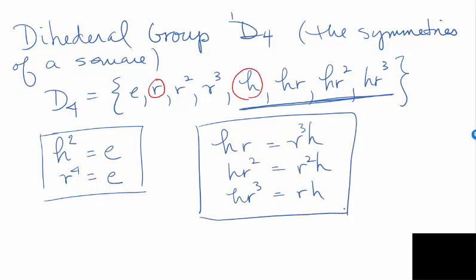Notice a pattern: when you move H from the left to the right of a power of R, the exponent changes. HR has exponent 1, and 4 − 1 = 3, giving R³H. HR² has exponent 2, and 4 − 2 = 2, giving R²H. HR³ has exponent 3, and 4 − 3 = 1, giving RH. This is a handy way to remember the rules rather than just memorizing them.